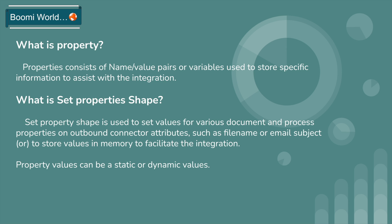For example, if you are going to store an employee ID value, you need to specify set properties. You set the property based on the property type — whether it is a dynamic document property, document property, process property, or dynamic process property. Based on your requirement, you choose the property type. The employee ID is the name, and in that name you store the document value from the source system.